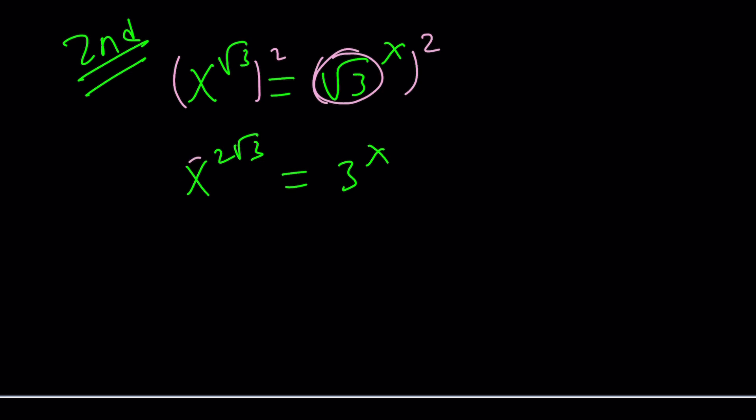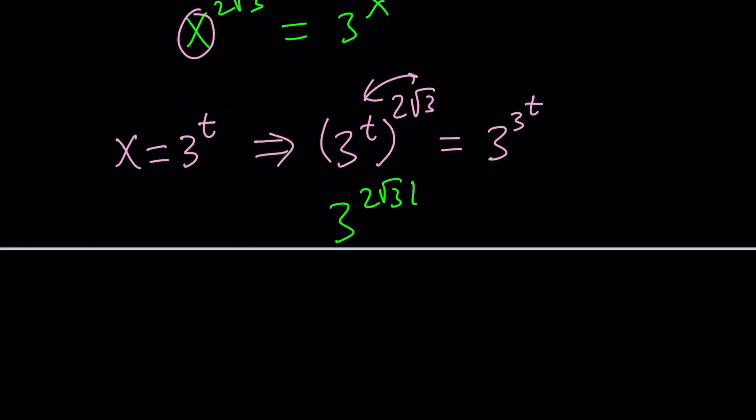Why not replace x with something like this? Maybe x can be 3^t, because t is one of my favorite variables, also one of my favorite drinks. So now we can do that on both sides. 3^t replaces x to the power 2√3, and then 3 to the power x, which is 3^(3^t). We're going to multiply these exponents. That gives us 3^(2√3·t) = 3^(3^t). From here, we get another equation.